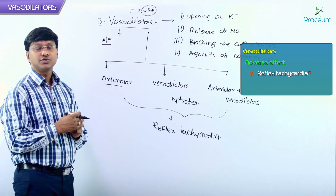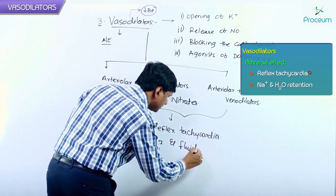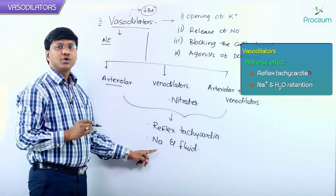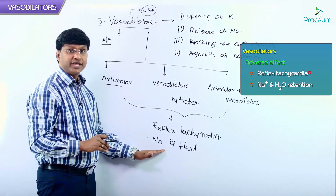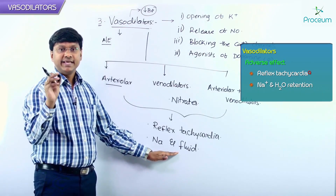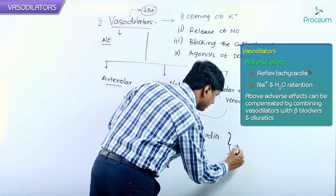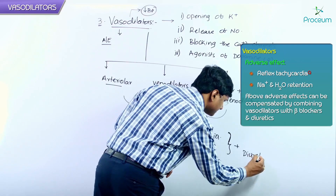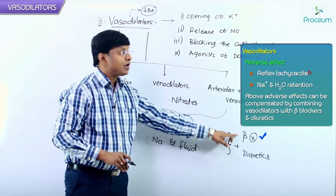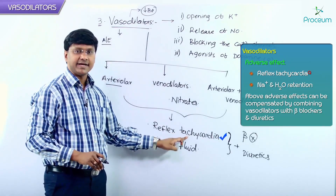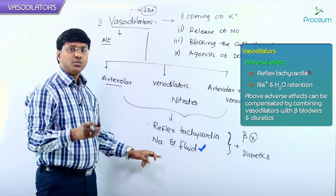Vasodilators also cause sodium and fluid retention due to compensatory mechanisms. Because of this, they are best utilized in combination with diuretics and beta blockers. Giving beta blockers along with vasodilators reduces reflex tachycardia, while giving diuretics reduces sodium and fluid retention.